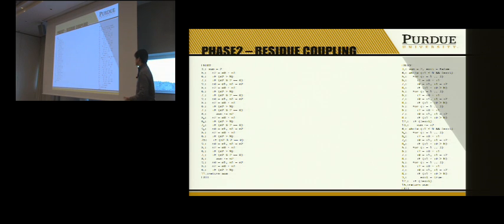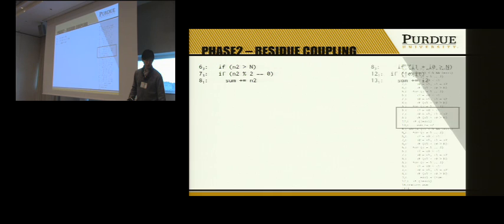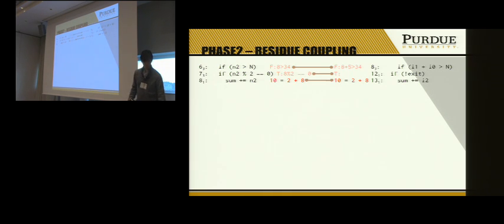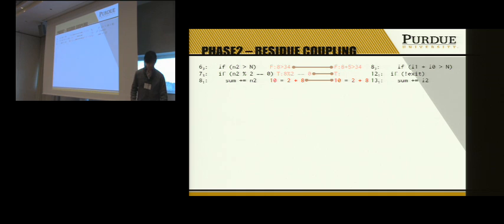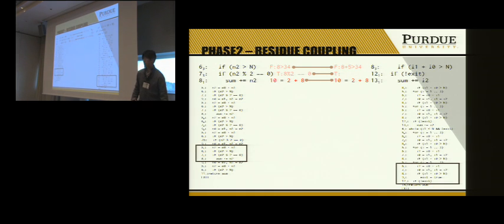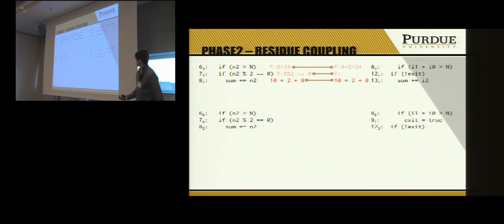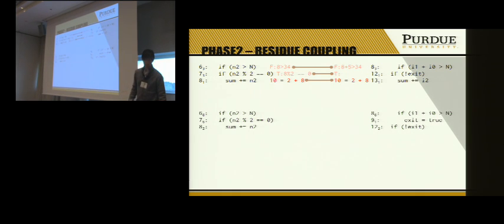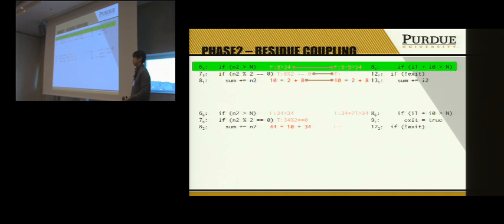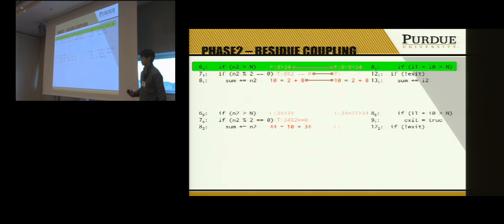In the second step we try to couple the residue traces. Looking at the part of execution already matched in the first phase, statement 8 and statement 13 have equivalent state and can be matched. However, the last part of the execution cannot be matched because of the bug in statement 8. From the previous matching history, we know that statement 6 can be matched with statement 8, and using this information we can couple the unaligned predicates together.